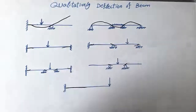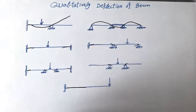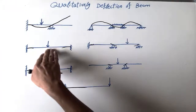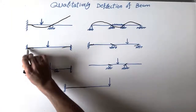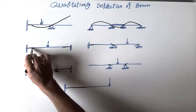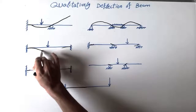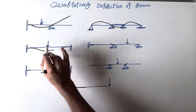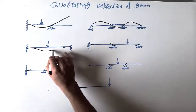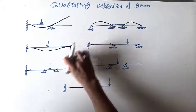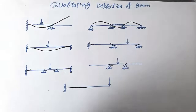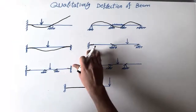Third beam: we have both ends fixed and a point load acting in the middle of the beam. How would the deflection shape look? We have the fixed points, and due to the point load acting downward, the beam will make a curve and then go up again toward the final fixed point.